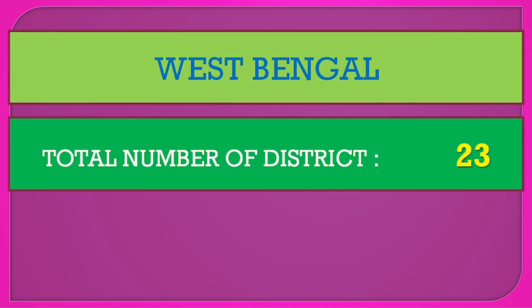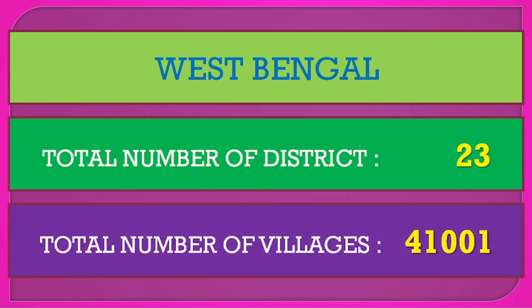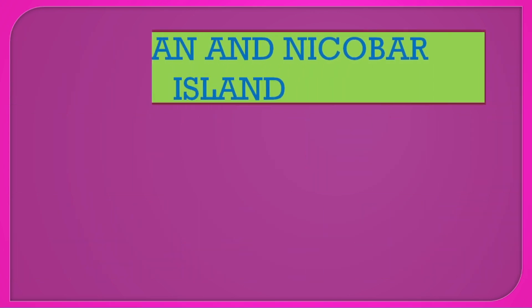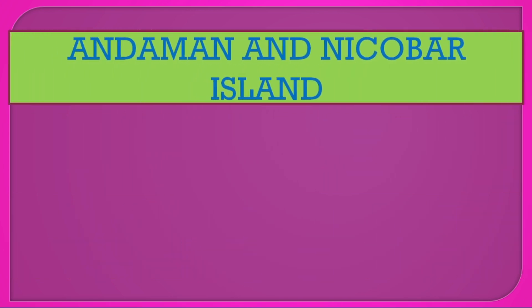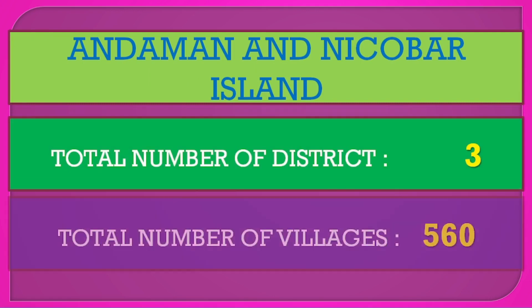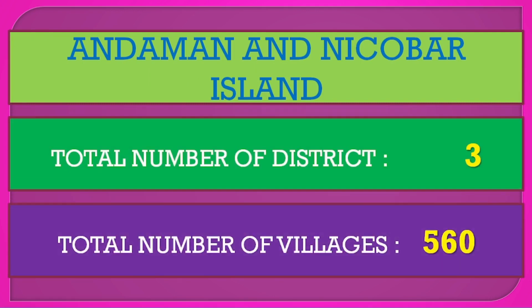West Bengal: total number of districts 23, total number of villages 41,001. Andaman and Nicobar Islands: total number of districts 3, total number of villages 560.